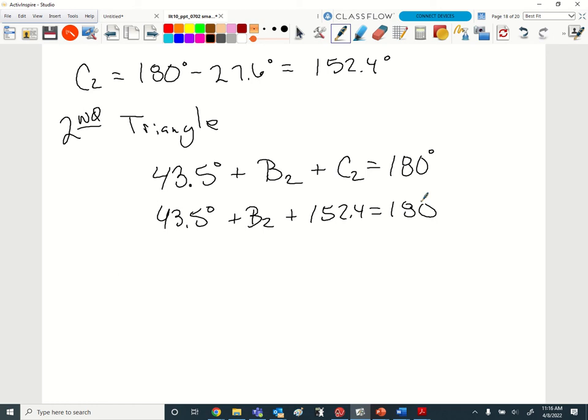So to do that, my angle A, which is going to be my first triangle and second triangle because that's given to me, 43.5 degrees plus angle B, because I don't know B yet. But if there's a C2, then there's got to be a B2 plus C2. I'm going to put C2, and all those together are going to equal 180 degrees. We do know what C2 is. So 43.5 degrees plus B2 plus 152.4 equals 180.